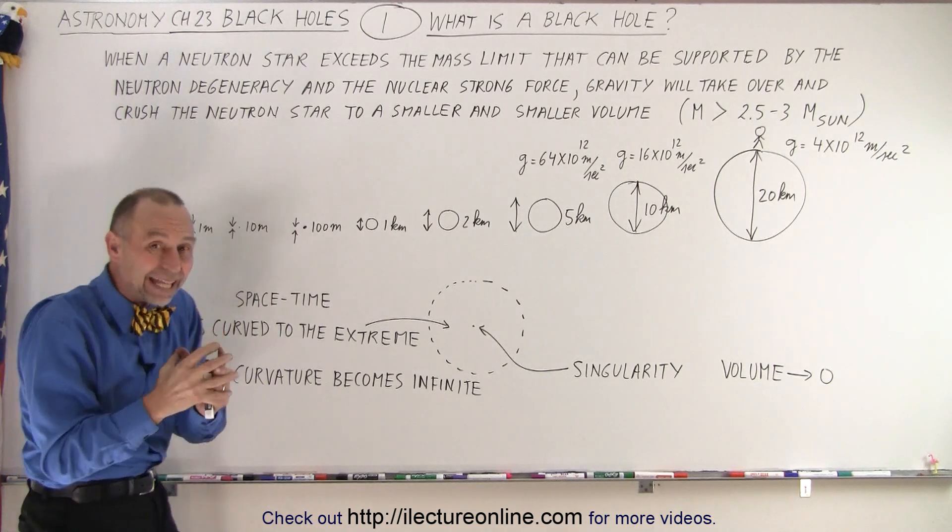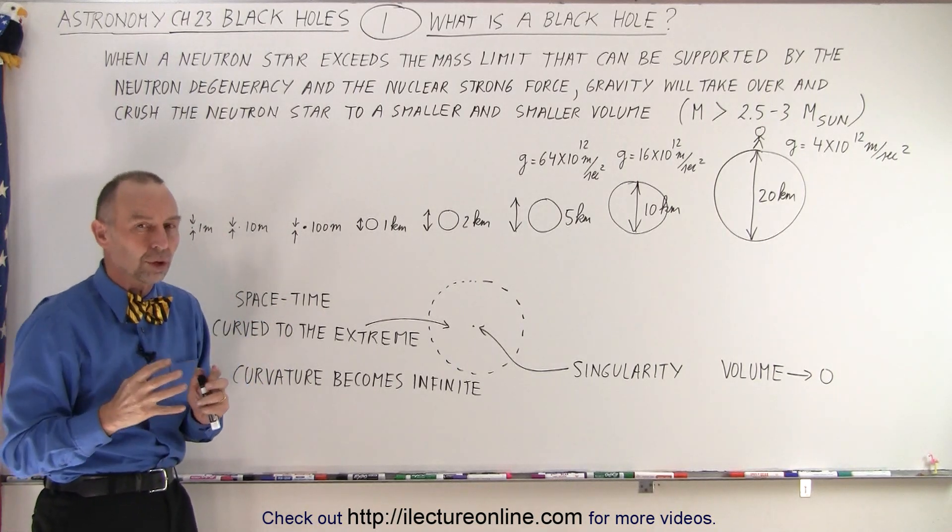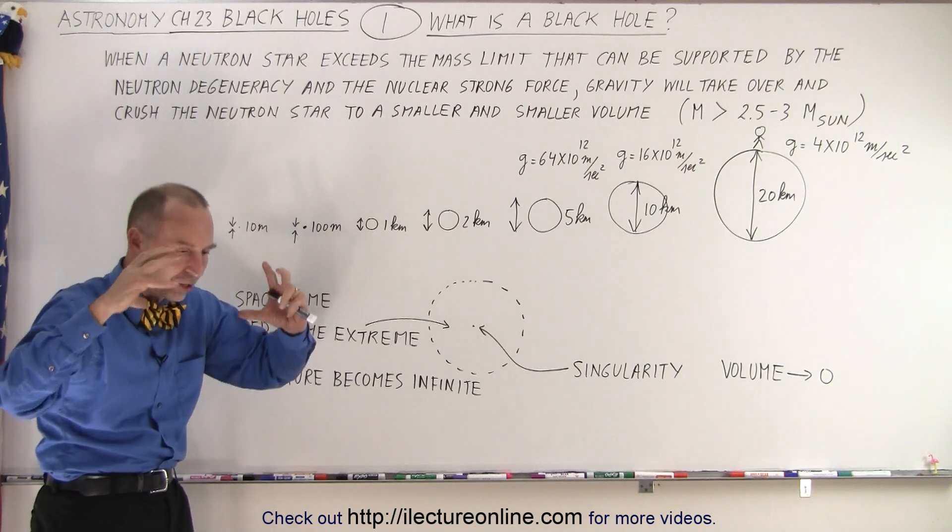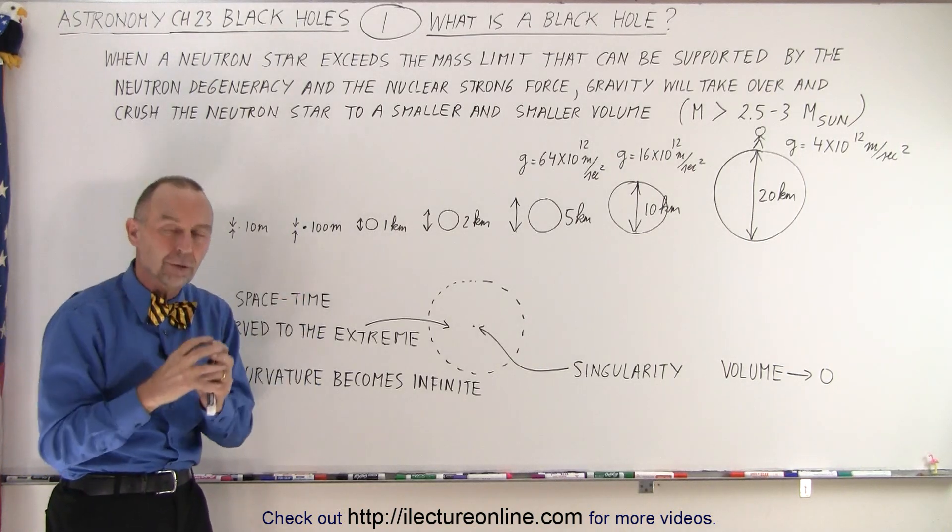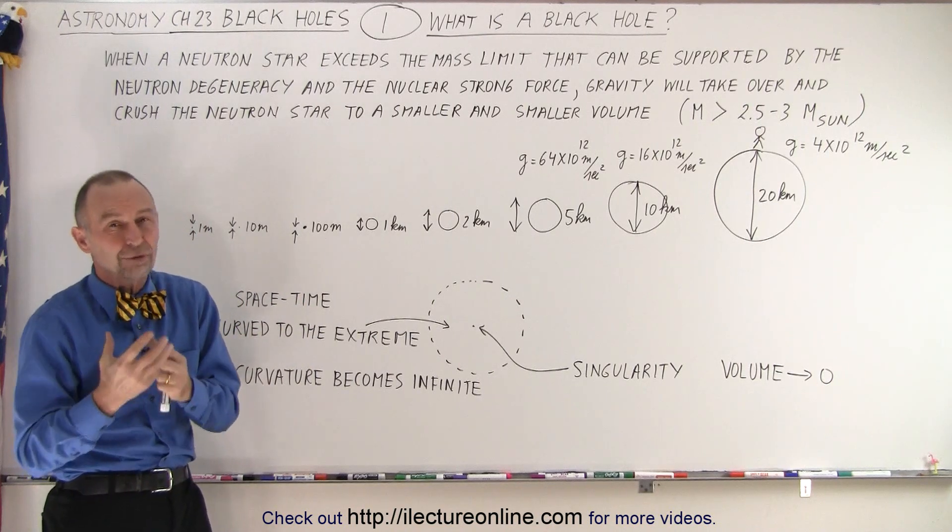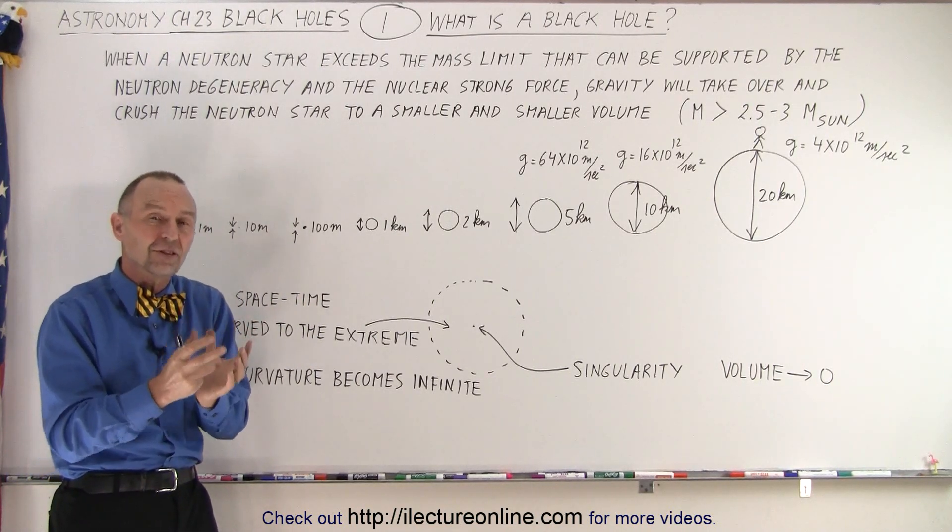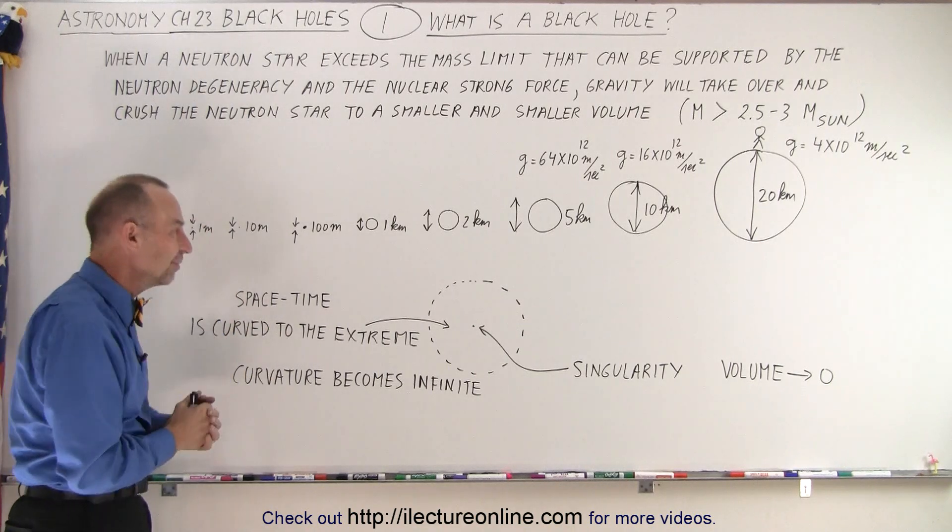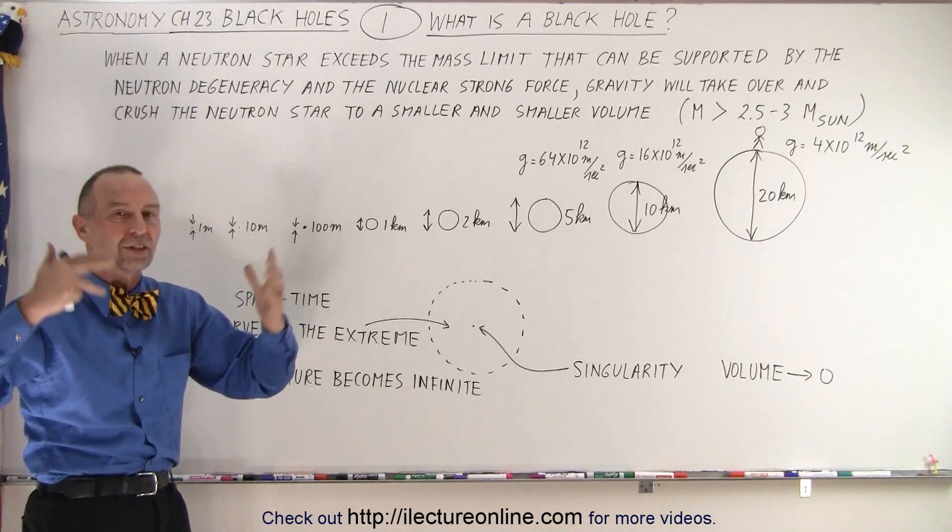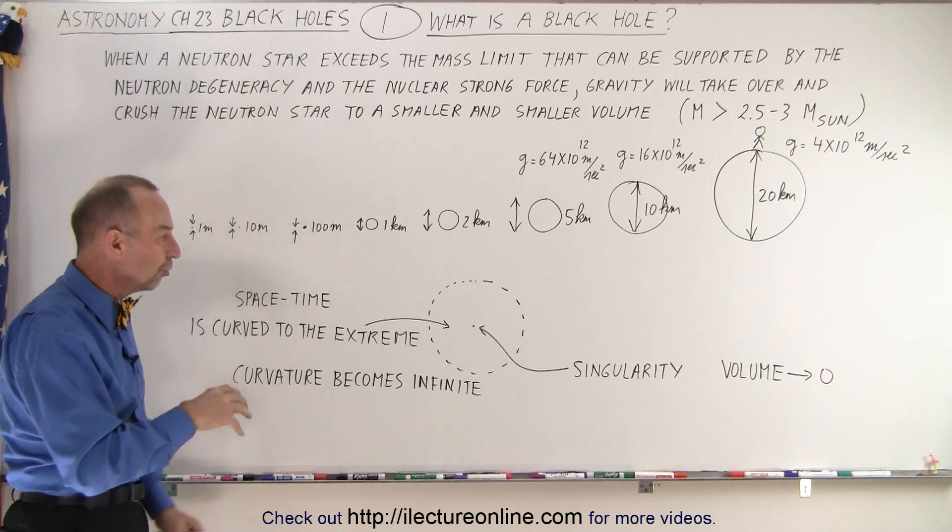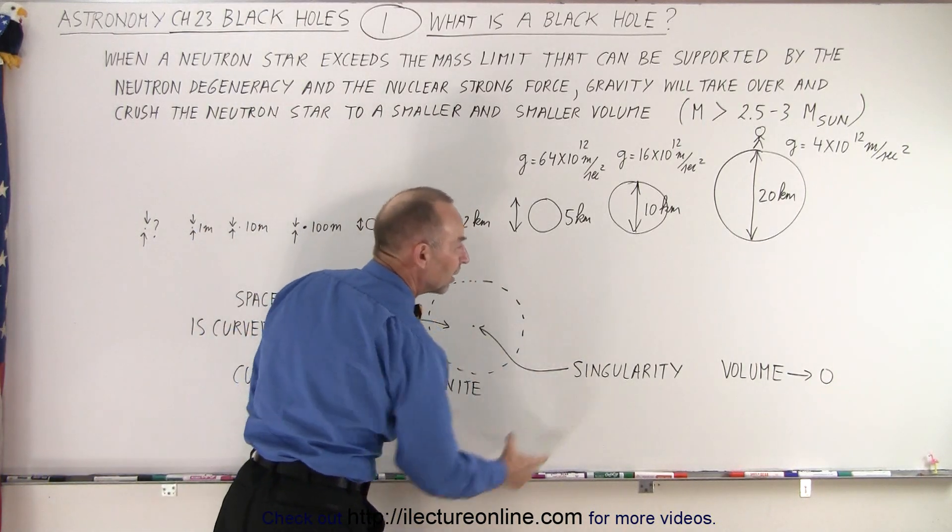Where it actually ends, no one really knows for sure, but essentially the idea is that the volume goes down to essentially zero. Does it really go to zero? Of course, we don't know for sure, because we don't know what the properties of physics are by the time we reach this kind of density. The density is just off the scale, absolutely enormous. So we end up with something that we call a singularity.